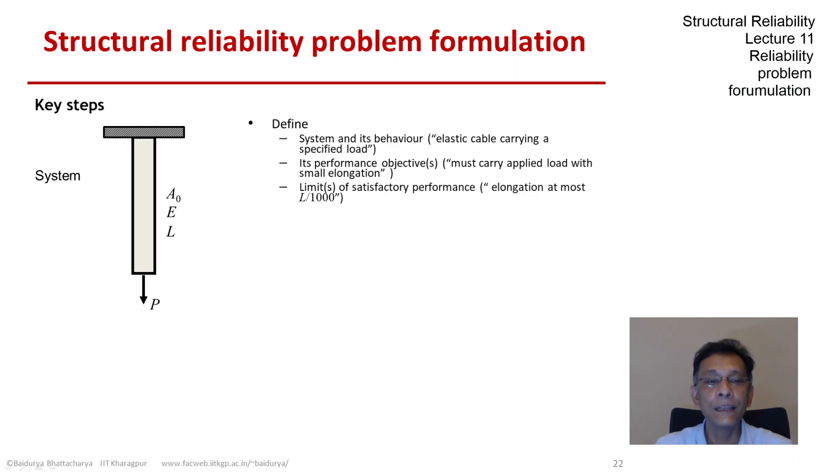So, the cable must carry the load and it should elongate within limits. So, the next thing to define would be the limits of satisfactory performance. In this case, it is one sided that elongation, just an example, that elongation is at most L by 1000.